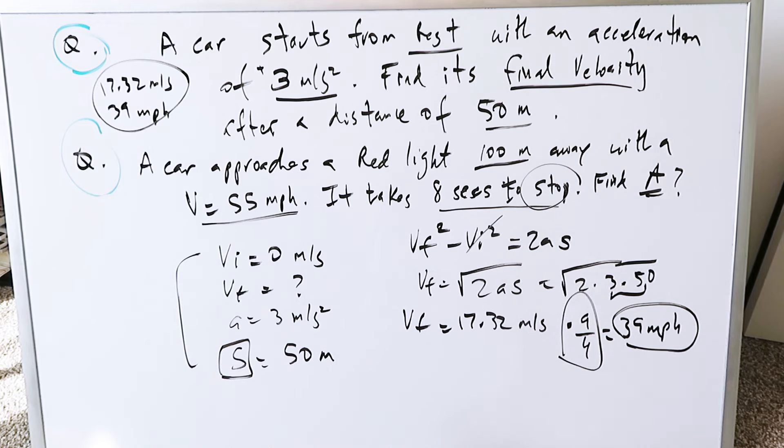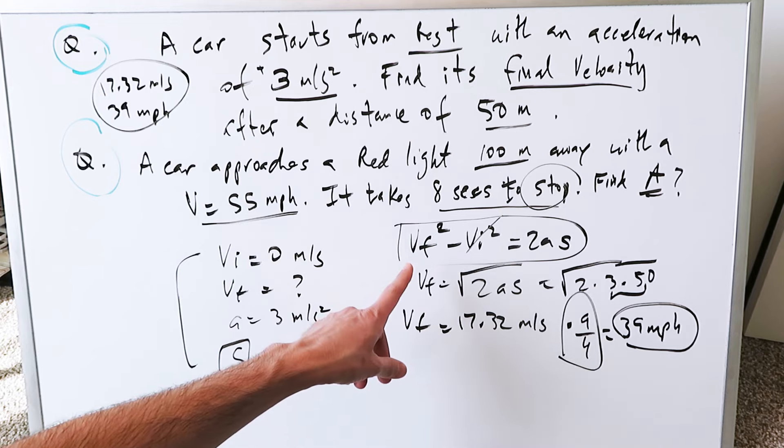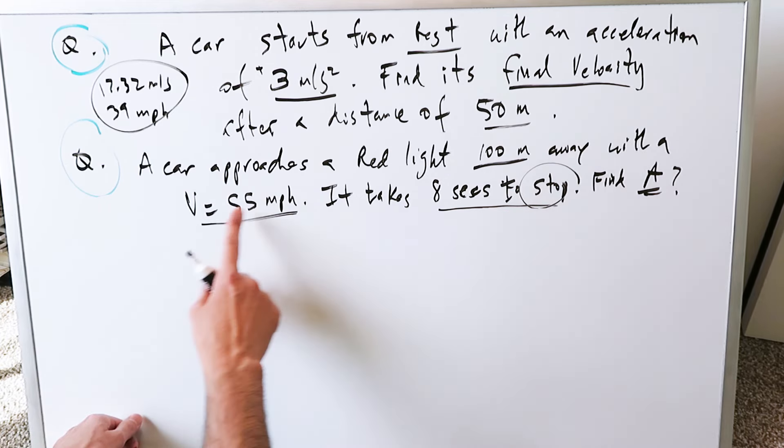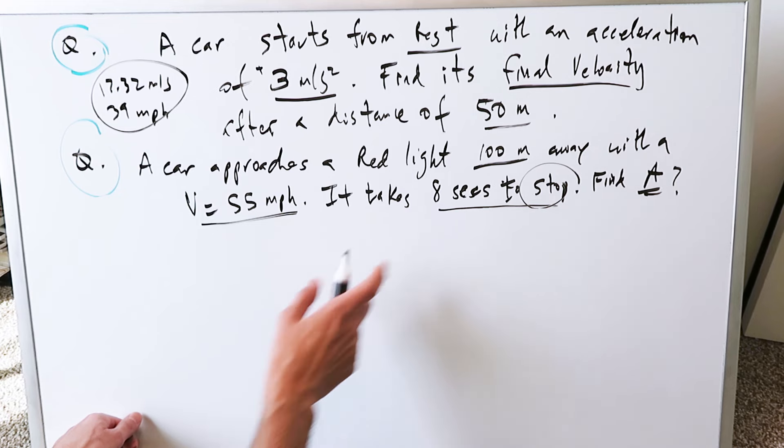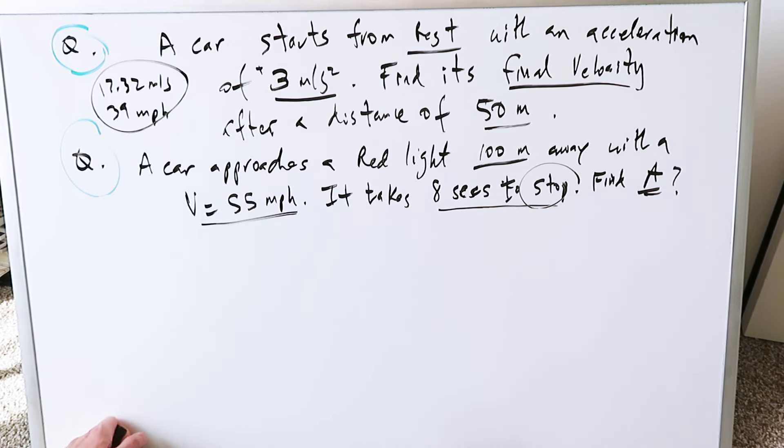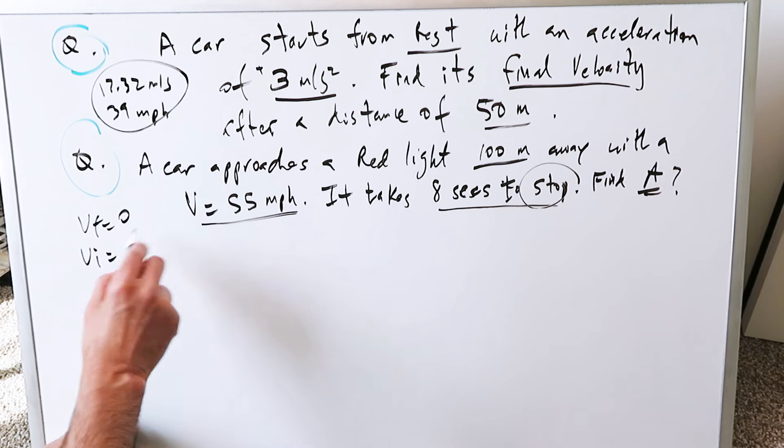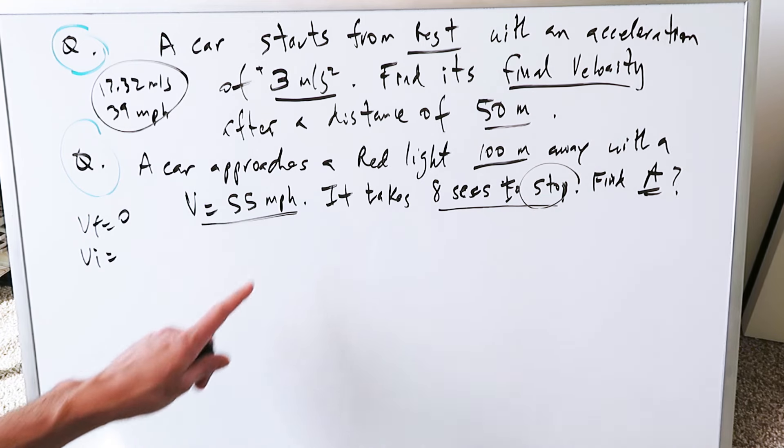But you see how everything came about. This right here is your equation to memorize. It's called the third law of motion. In some books, they call it the fourth law. But generally, this is your third law of motion. You're looking at variables which don't involve time. So it's easy to utilize this. Second question, your car is approaching a red light. It's 100 meters away from that red light. With a velocity of 55 miles per hour, it takes 8 seconds to come to a stop. You have to find your acceleration. Think about it. You're driving now, and you're coming to a stop. Your final velocity here must be 0. But your initial velocity is what you're starting out with. But here is miles per hour.